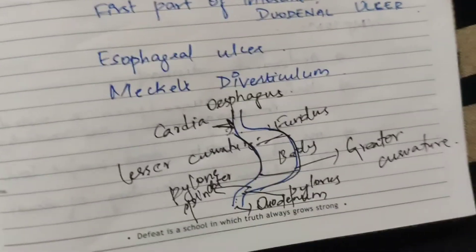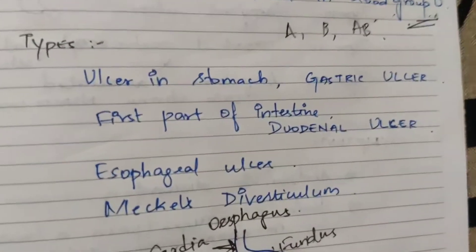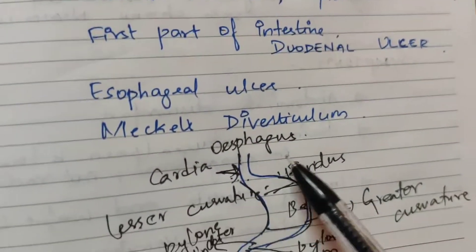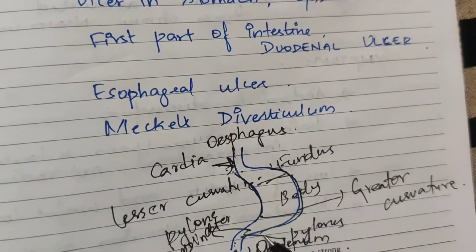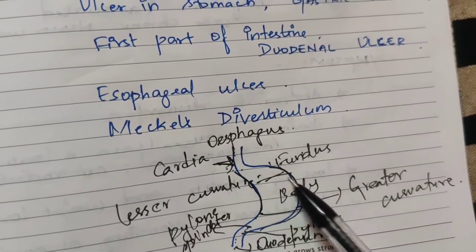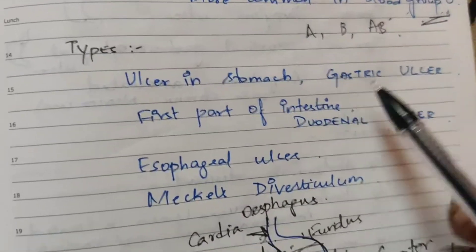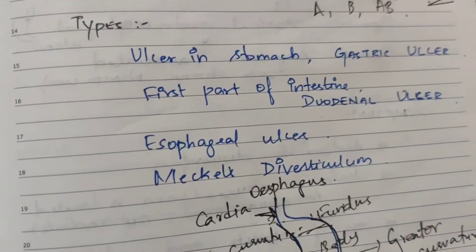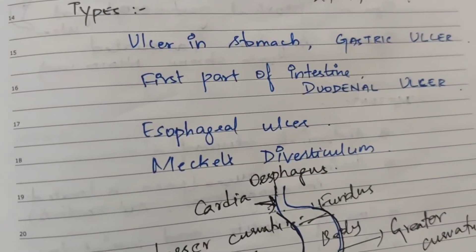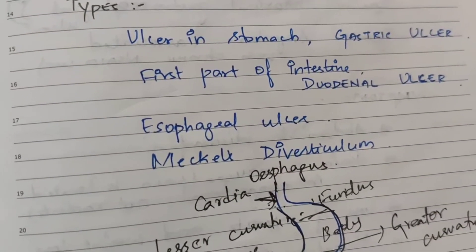Looking at this ulcer on the stomach, in this region that is the gastric ulcer. The first part of the intestine is the duodenum.